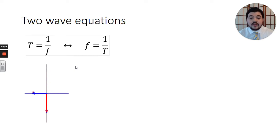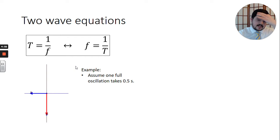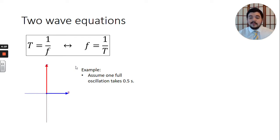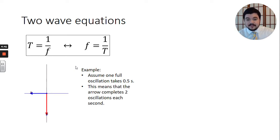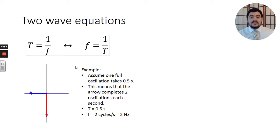Let's consider just one cross section of the overall wave. We have these oscillating electric and magnetic fields. Let's assume it takes half a second to complete one cycle — we're going to complete two cycles in a full second. So our time period is half a second, and the frequency is two cycles per second, a.k.a. two hertz. That shows the inverse relationship between period and frequency.